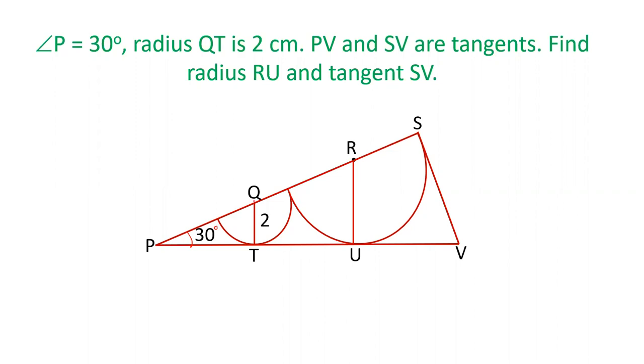This is QT which is the radius of this smaller semicircle. So Q is the center of this smaller semicircle. R is the center of this bigger semicircle and RU is the radius of this semicircle. We have to calculate the length of SV, the radius RU, and all the other values also. So let's start.